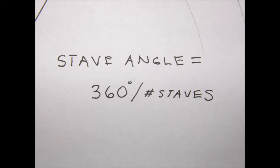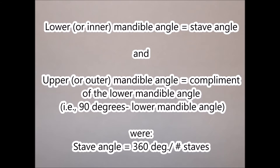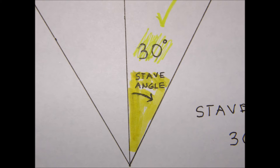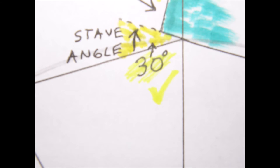With a little bit of plane geometry, the angle of the lower mandible is equal to the stave angle, and the angle of the upper mandible is equal to the complement of the stave angle — that is, 90 degrees minus the stave angle. Using a 12-sided polygon as an example, the stave angle is 30 degrees (that's 360 divided by 12). Therefore, the lower mandible angle is 30 degrees and the upper mandible is 60 degrees — that is, 90 degrees minus 30 degrees.